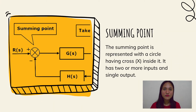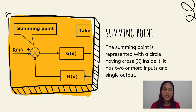The second basic element of a block diagram is the summing point. The summing point is represented with a circle having a cross inside it. It has two or more inputs and a single output. It produces the algebraic sum of the inputs. It also performs the summation or subtraction, or a combination of summation and subtraction of the inputs based on the polarity of the inputs. Let us see these three operations one by one.